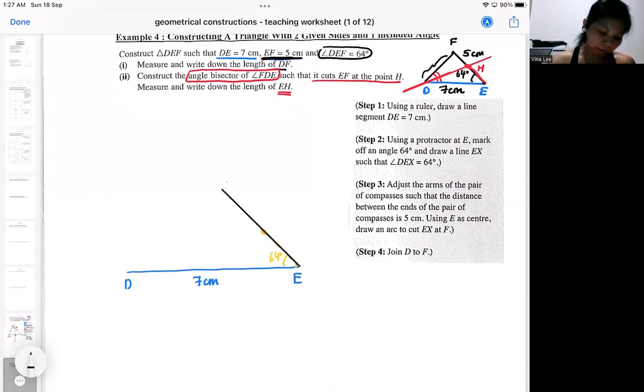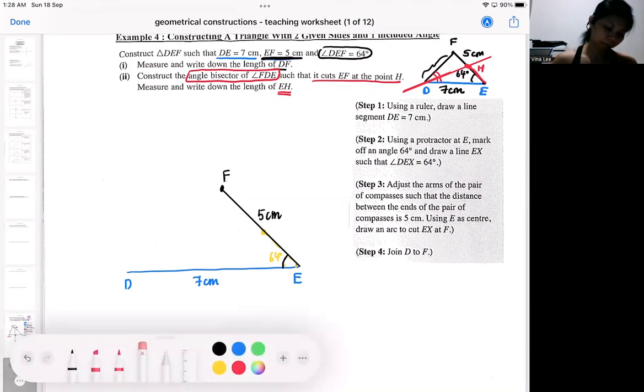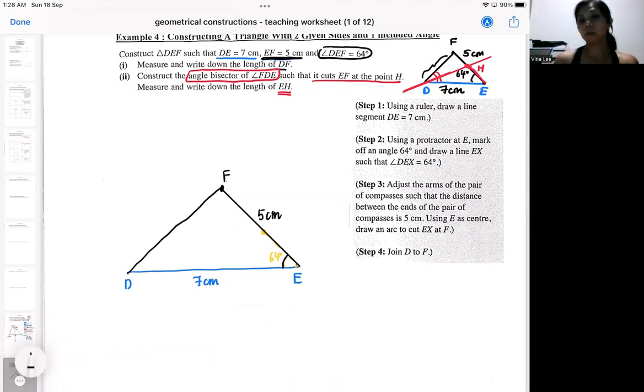You can use your ruler and measure exactly 5cm. So in this case, you can choose to do without the arc. Because the arc is meant when you don't know where is your 7cm or whatever. Here, it's a 64. You already got the 64. And I need exactly 5cm. So you can just use your ruler and measure. And then this will be your triangle.